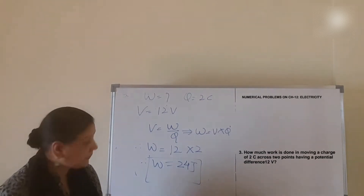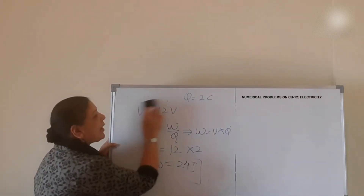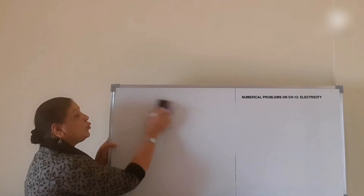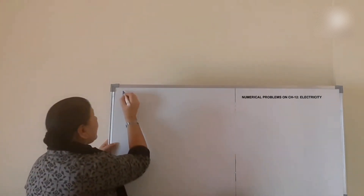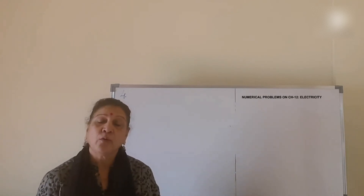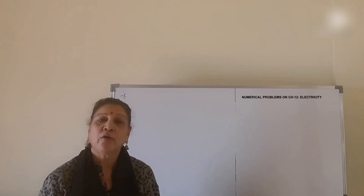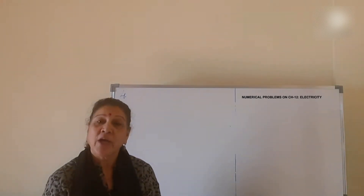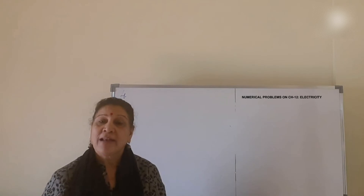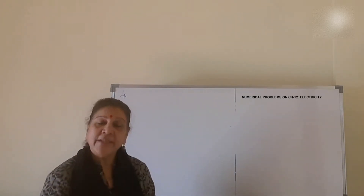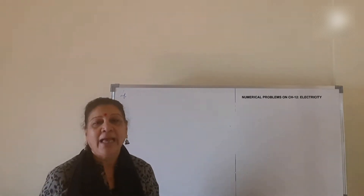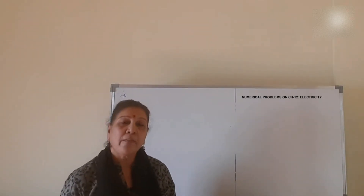Now for the fourth question — please keep on practicing numericals. I find that very simple mathematical operations are used but some students are scared of numericals. My suggestion is to keep one page in your class notebook or rough book to write down all the formulas for that particular chapter. For Chapter 12 Electricity, write all the formulas on the first page and just go through them — that's the best tool to memorize all formulas.